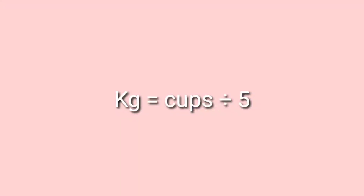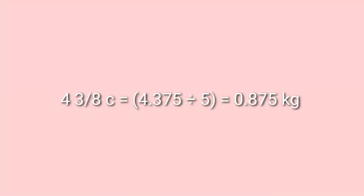Next is sugar. To convert cups of sugar to kilograms, divide the sugar by the conversion ratio — 1 kilogram of sugar equals 5 cups. Use this formula: kilograms equals cups divided by 5. For example, 4.375 cups divided by 5 equals 0.875 kilograms of sugar.